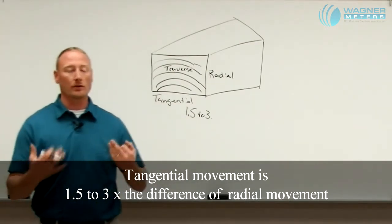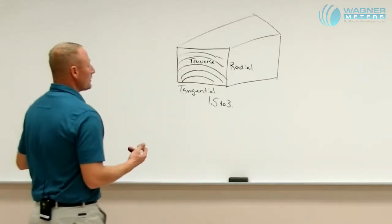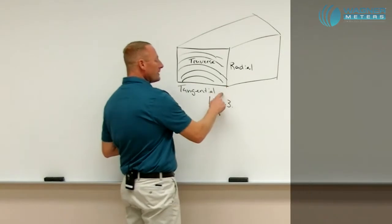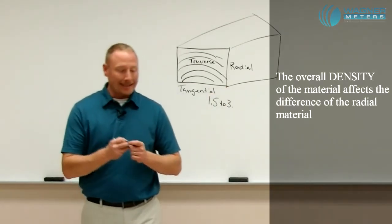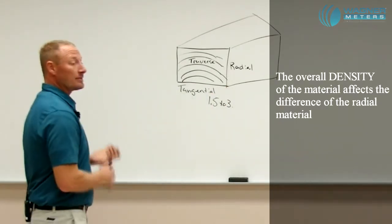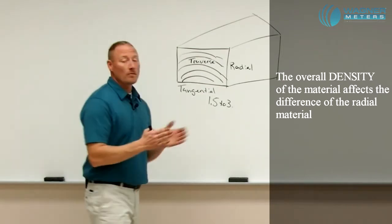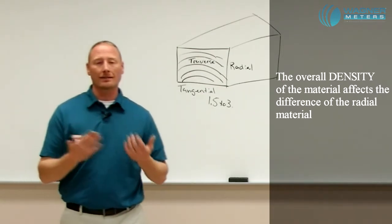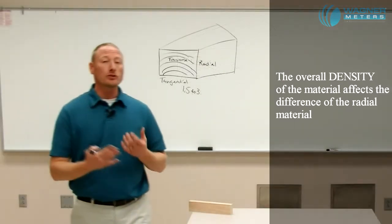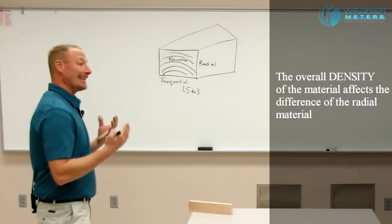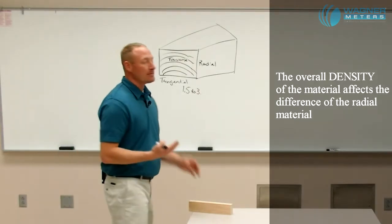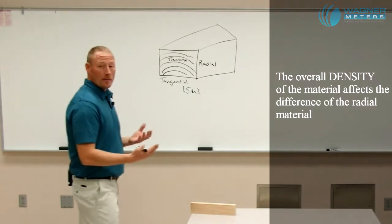What affects that 1.5 to 3 times difference? Well, the biggest thing is the overall density of that material. So a material that is much denser is going to have much more movement than a material that is more porous. So example, basswood is going to move significantly less than a very dense material such as teak or hard maple.